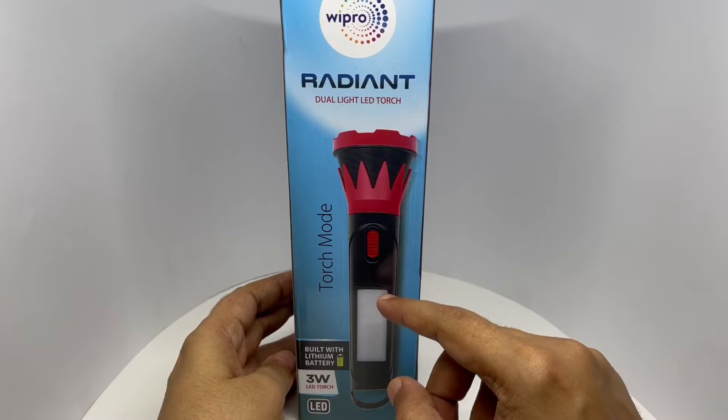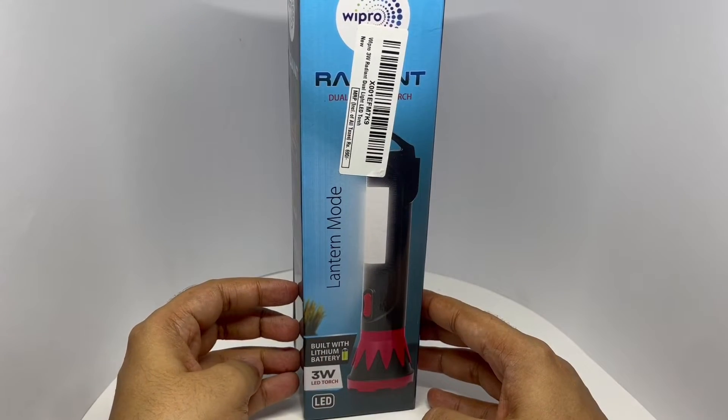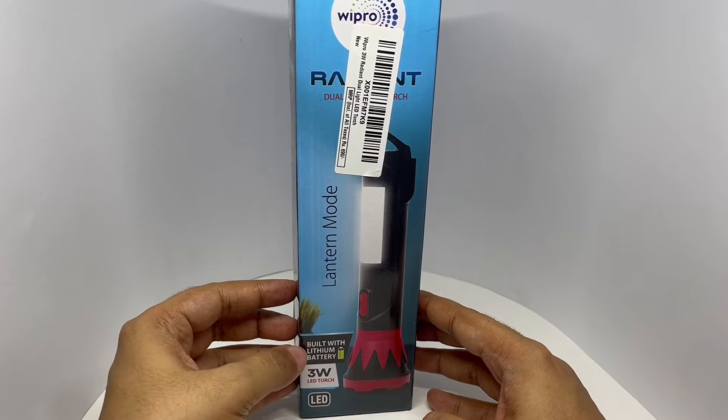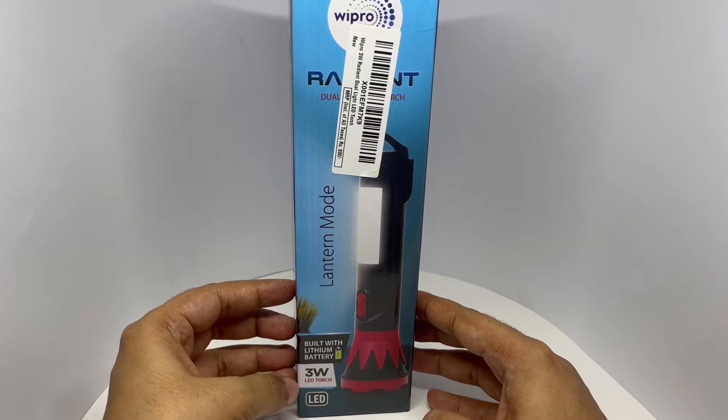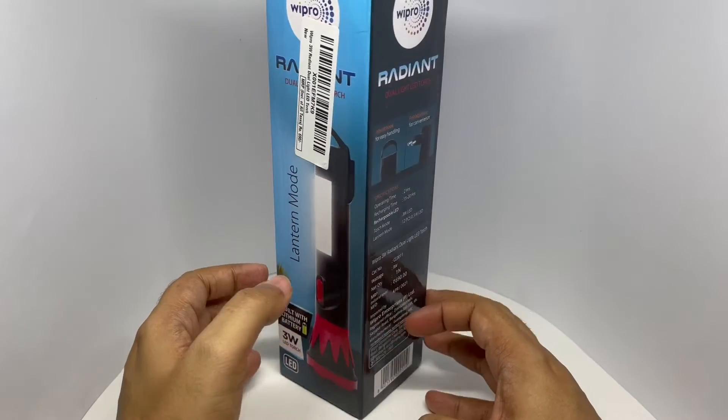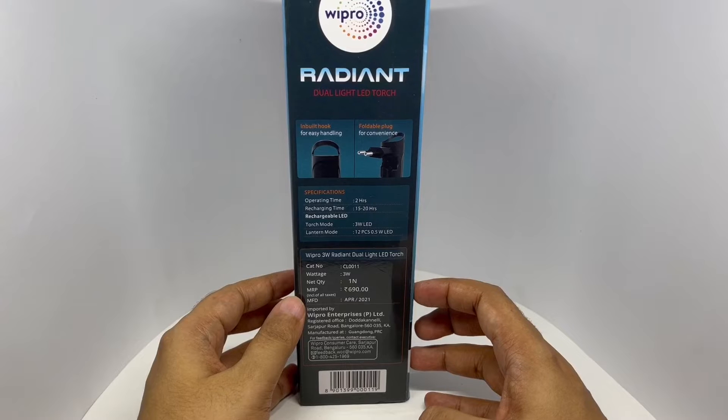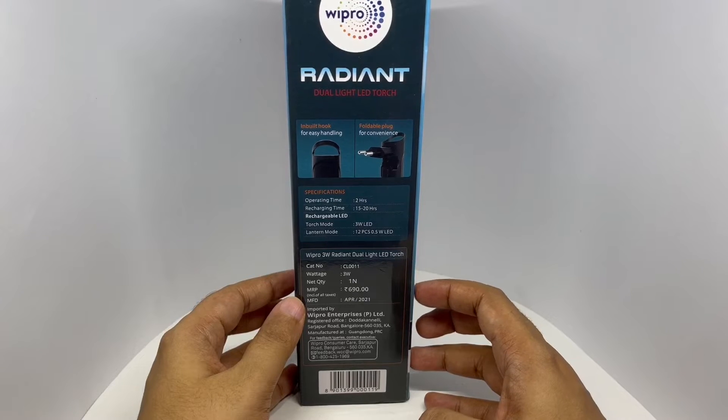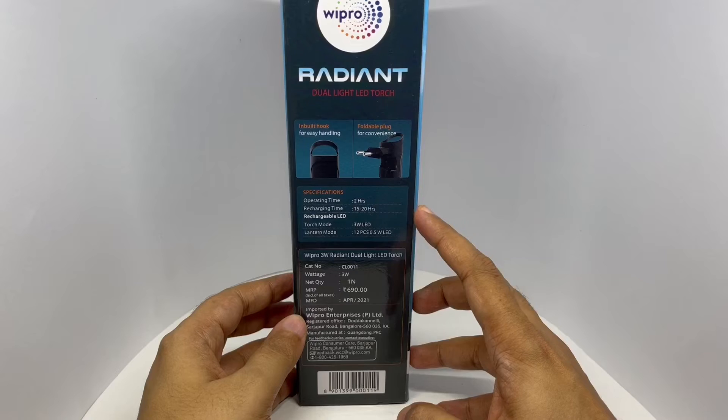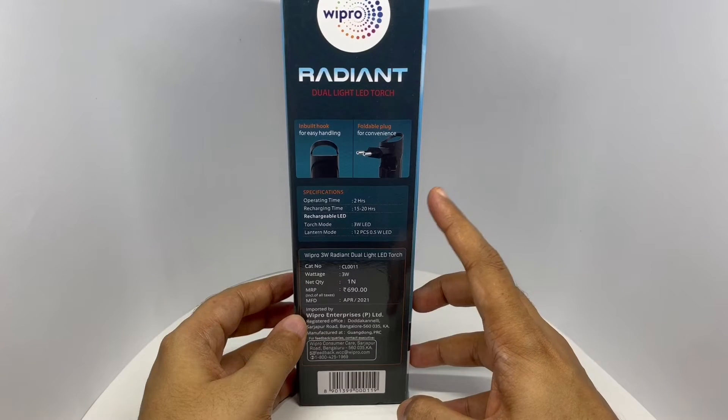It has a torch mode and a lantern mode. Built-in lithium battery, 3 watt LED torch, costs around 690 rupees or 10 dollars or so. Takes about 15 to 20 hours to charge. Gives you about 2 hours of light.